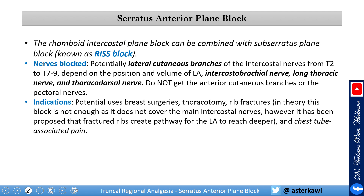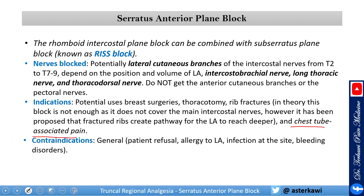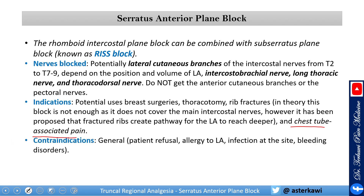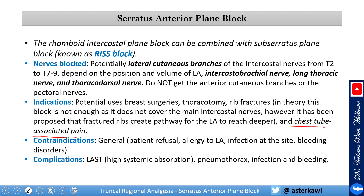Indications and potential uses include breast surgery, thoracotomy, and rib fractures. In theory, this block is not sufficient for rib fractures alone as it does not cover the main intercostal nerve branch. However, it has been proposed that fractured ribs create a pathway for local anesthetic to reach deeper by breaking the fascial plane. It is very helpful for chest tube site pain and can be performed with the patient in the lateral decubitus position. Contraindications are general: patient refusal, allergy to local anesthetic, infection, and bleeding. Complications include high absorption in the chest wall, pneumothorax, infection, and bleeding.